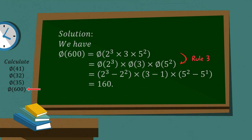So we can actually split this up using rule 3. So we get phi of 2 cubed times phi of 3 times phi of 5 squared. Now we can use, in the case of 2 cubed, we can use that prime power rule. So we get 2 cubed minus 2 squared.